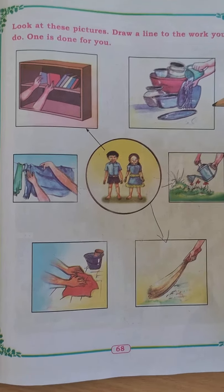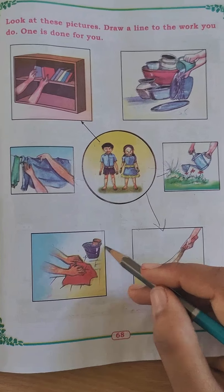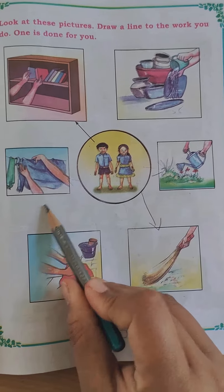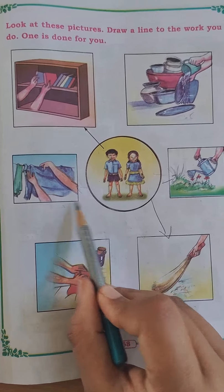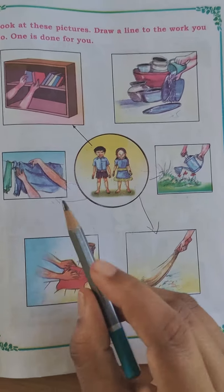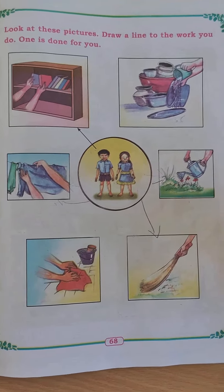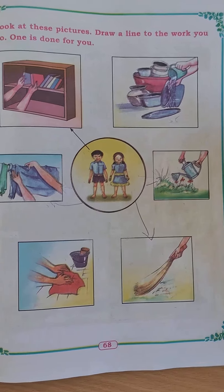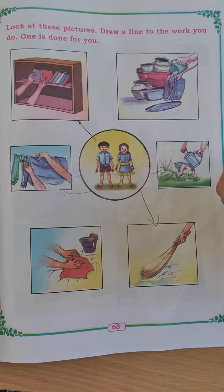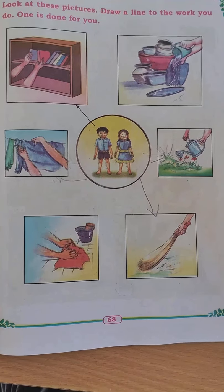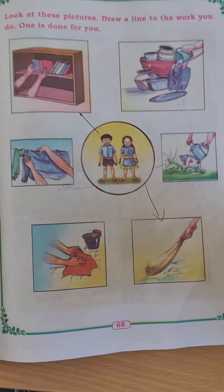You will not wash clothes, right? So don't put a line for this. We can't wash our clothes but we can help to put clothes out to dry. So what we observe from this activity is that we should do some work in our home also. We should do the things which are possible for us to do. These are good habits in our daily life.